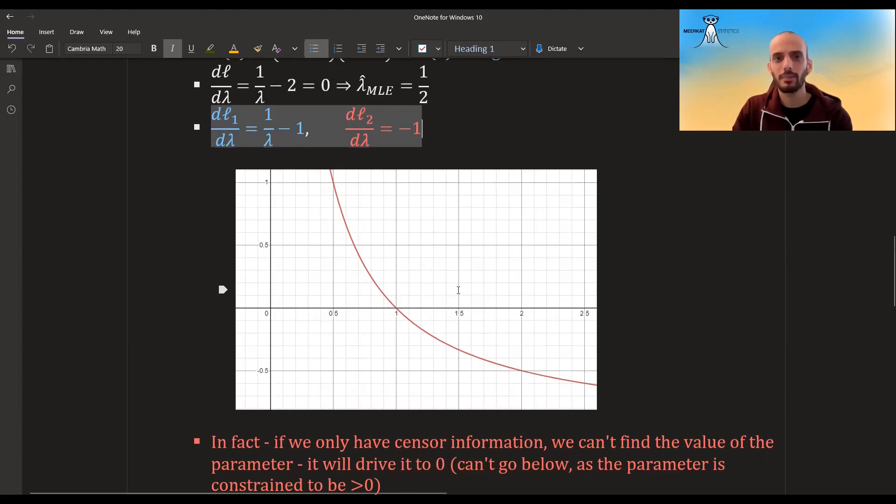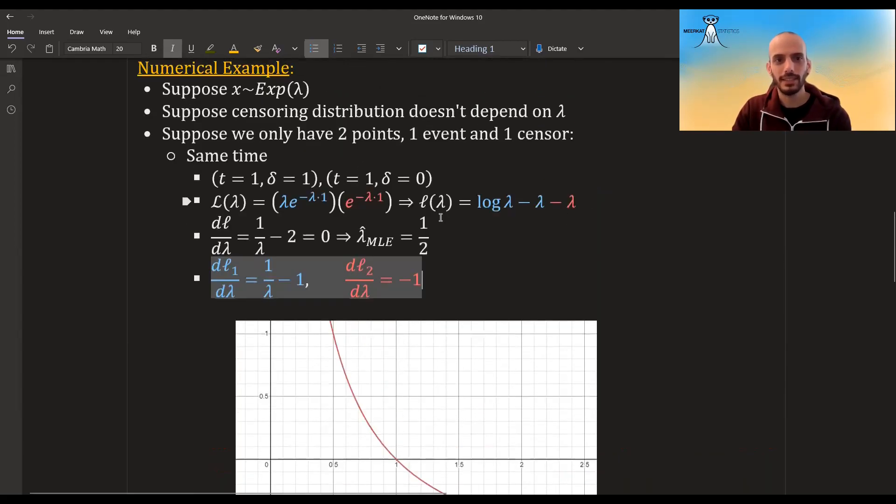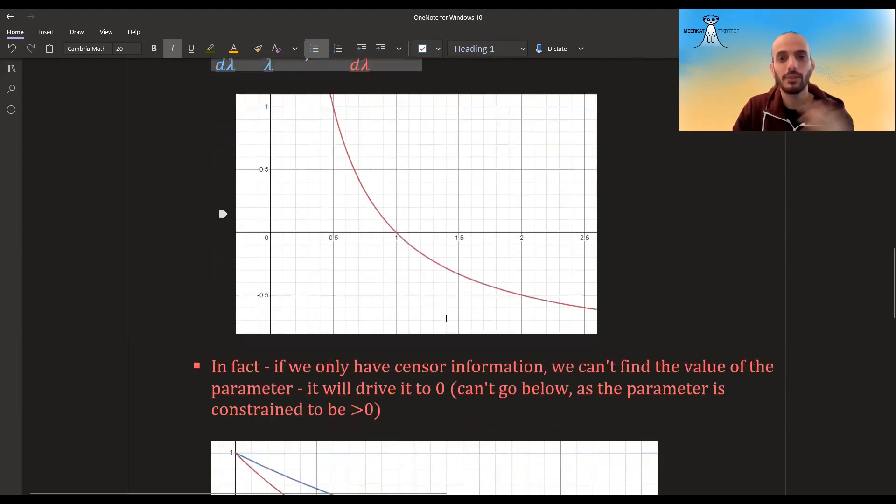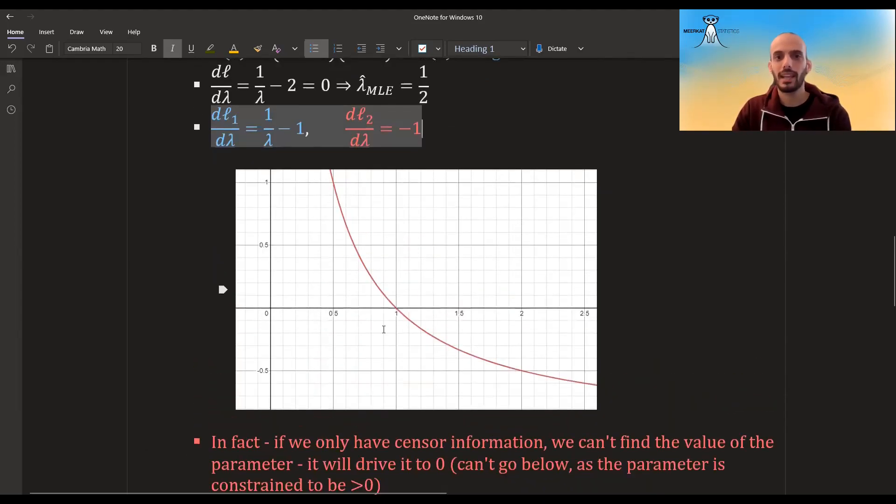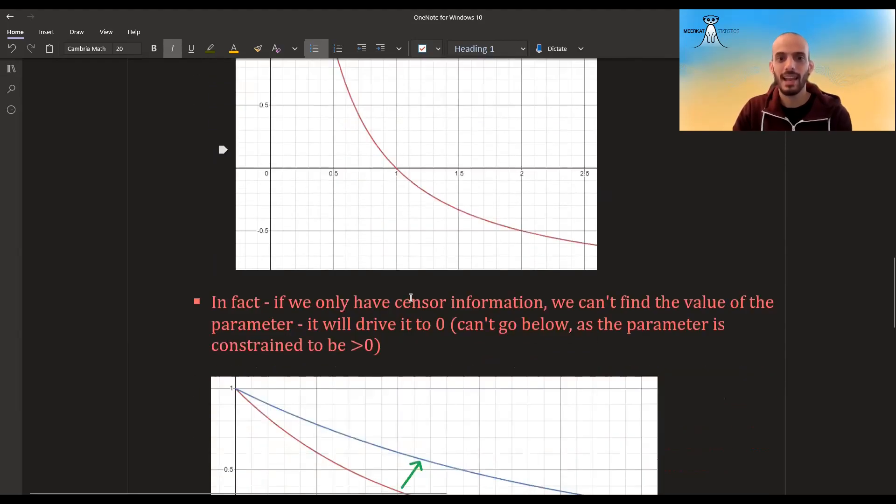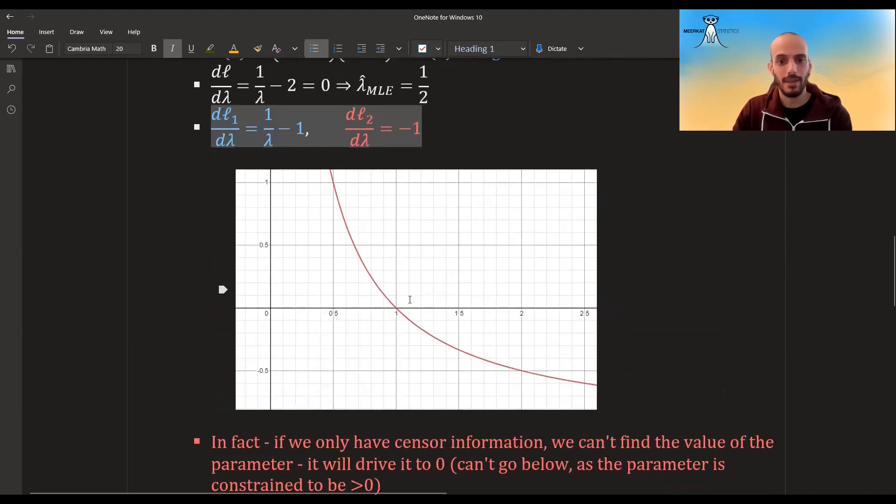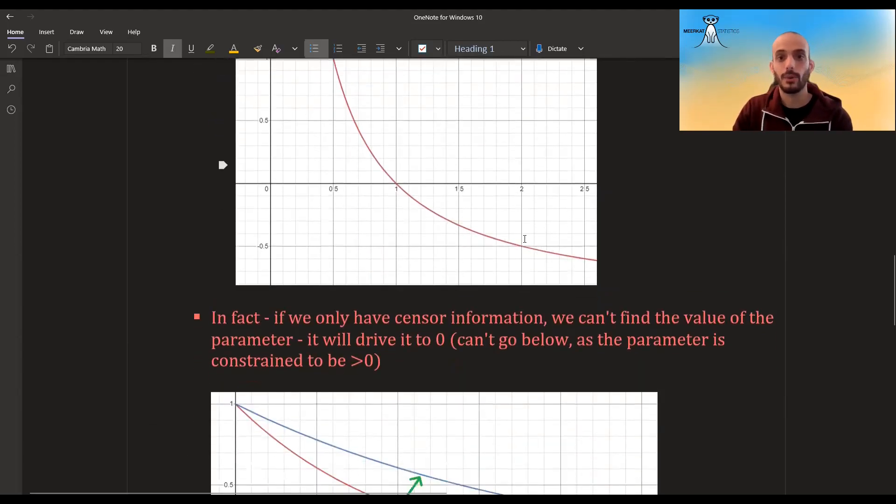So this is actually a problem. If we only have censored data, we can't say anything. If only we have censored data, then we can't, at least not with this method with maximum likelihood, we can't say anything about the times because it will just try to set the parameter to zero. And of course it can't.